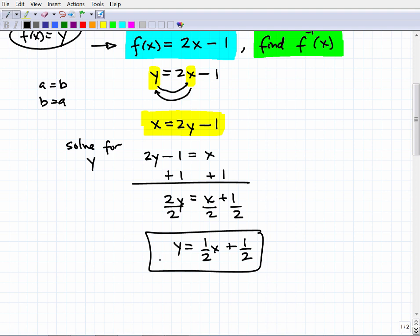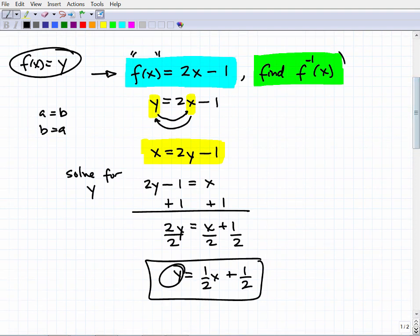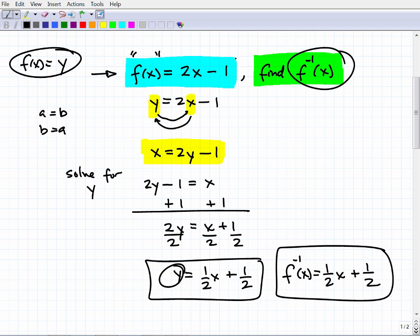So now I'm going to get y is equal to x over 2 is the same thing as 1 half x plus 1 half. At this point, this y, this linear equation, we're going to replace this y with this symbol here, the inverse notation. And so we have f of negative 1 x is equal to 1 half x plus 1 half. So this is our inverse function. So here, given this function, this is the inverse function.